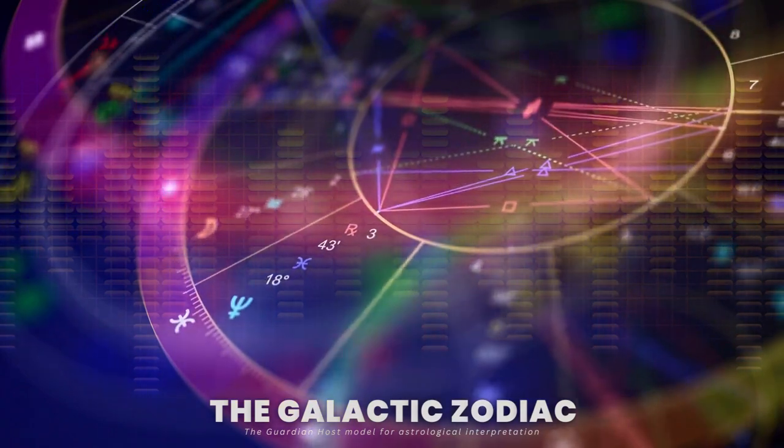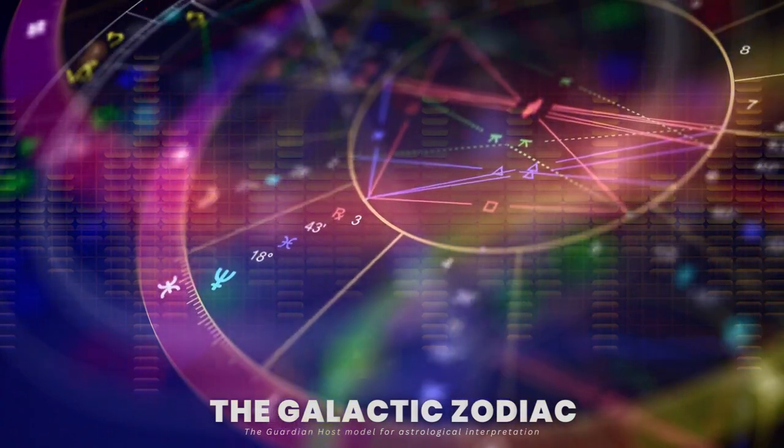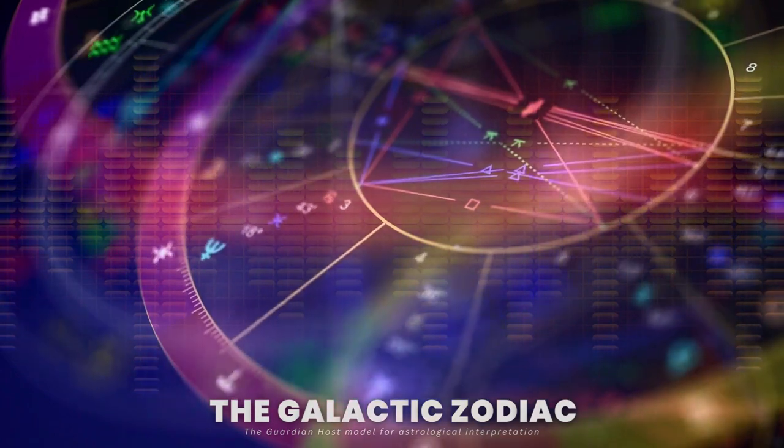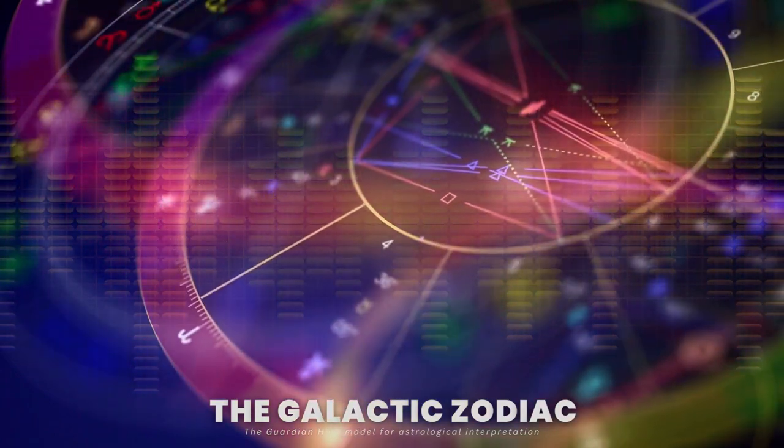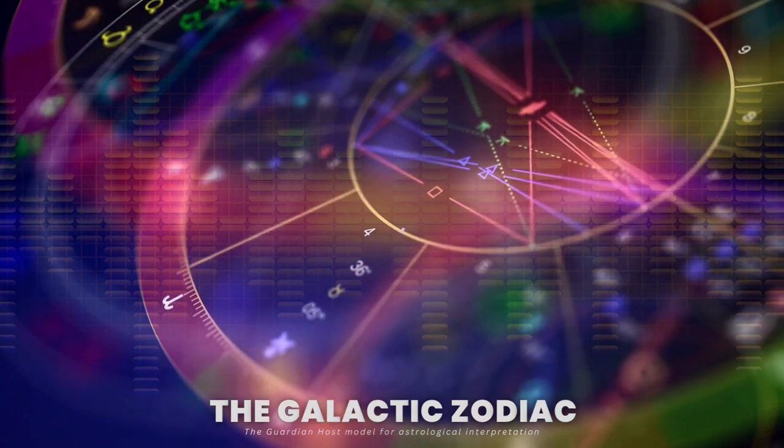Libra: October 31st to November 22nd. Its themes are sublimation and transmutation. Its element is air.